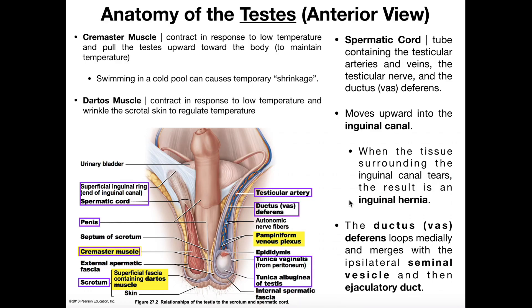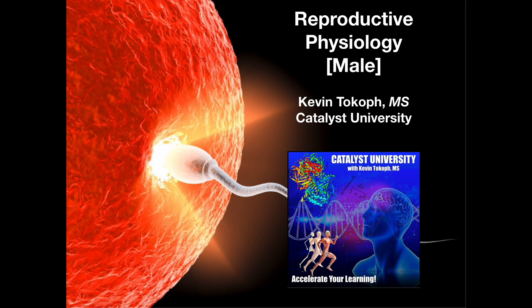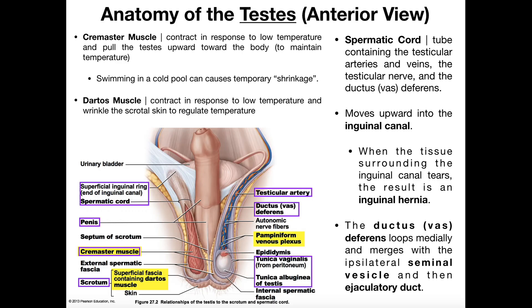Welcome back to Anatomy & Physiology on Catalyst University. My name is Kevin Tokow. Please make sure to like this video and subscribe to my channel for future videos and notifications. This playlist is going to be talking specifically about the anatomy and physiology of the reproductive systems. We're going to begin with the male reproductive system, and then after we complete this, we'll go into the female reproductive system.